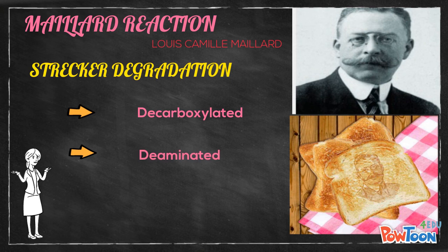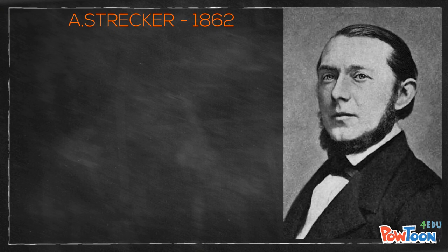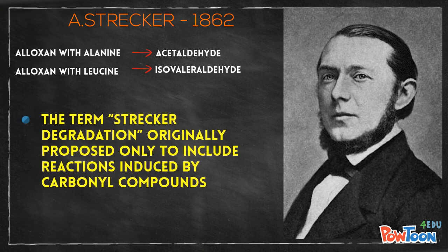Adolf Strecker in 1862 observed the formation of acetaldehyde and isovaleraldehyde in reactions of alloxane with alanine and leucine respectively. The term Strecker degradation was originally proposed for reactions induced by carbonyl compounds, but nowadays it refers to many other types of oxidative deamination.